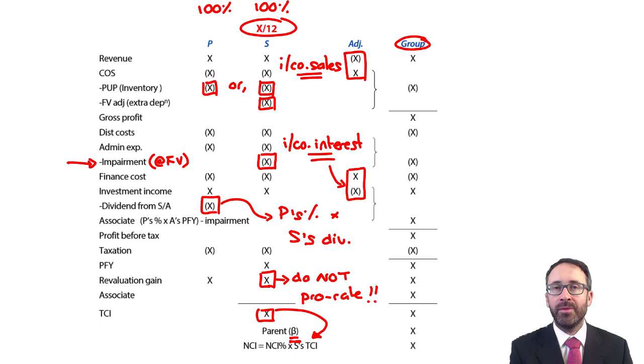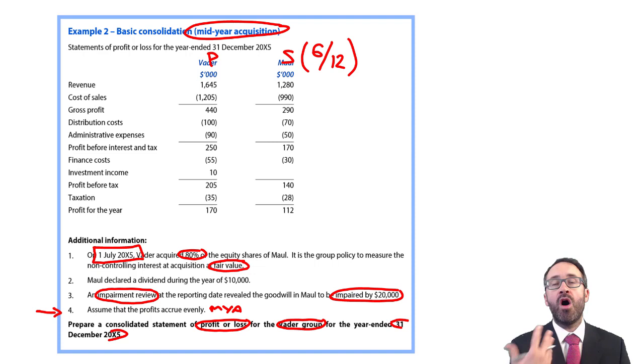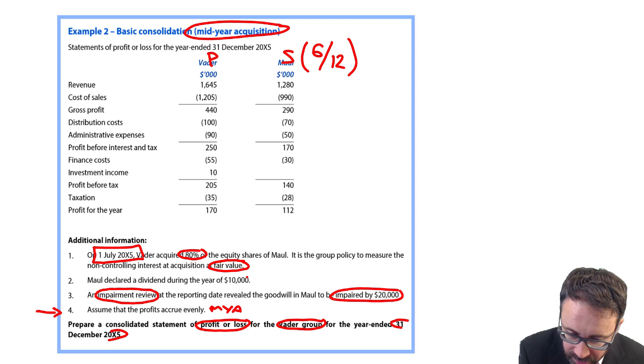When we go back to have a look at the standard pro forma, the focus here is on that impairment. The goodwill, the NCI is measured at the fair value. So that impairment will appear within S's column. Why? Because then when we go through and take the non-controlling interest share of S's profits for the year, the non-controlling interest will get that share of the impairment.